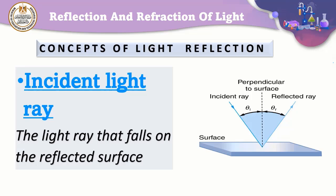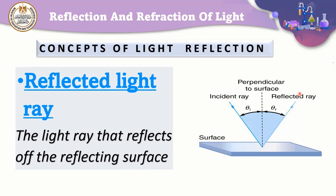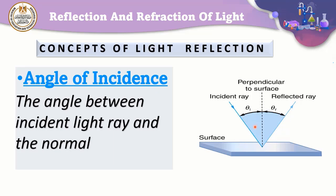Let's review the key concepts of light reflection. The incident light ray is the light ray that falls on the reflecting surface. The reflected light ray is the light ray that reflects off the reflecting surface. The angle of incidence is the angle between the incident light ray and the normal.